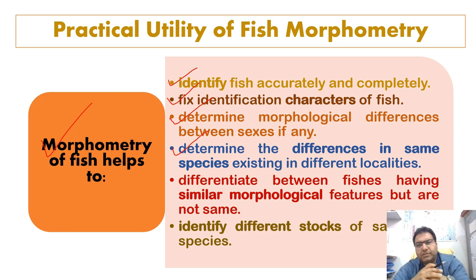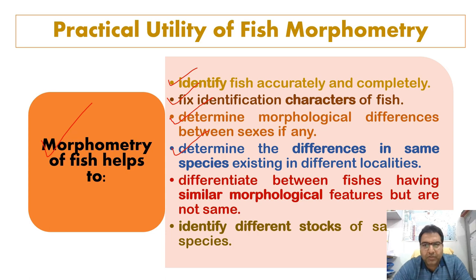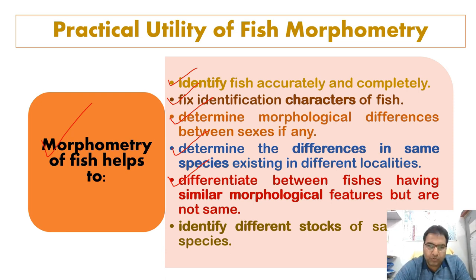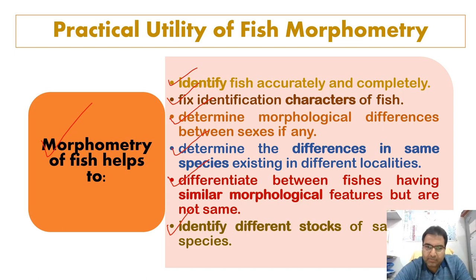Different species are impacted by the environment they live in. So if the same species is living in different environments, there is a little bit of difference between individuals. Morphometry helps us to know about that difference, to differentiate between fishes having similar morphological features but belonging to different species, and to identify different stocks of the same species.